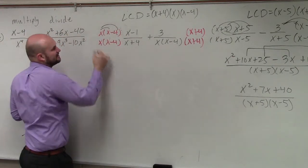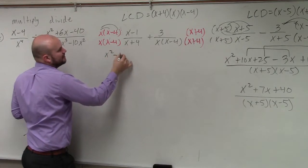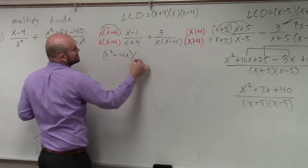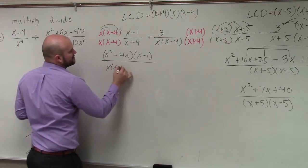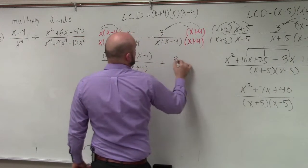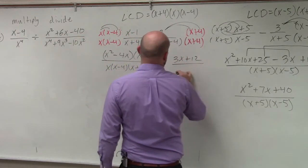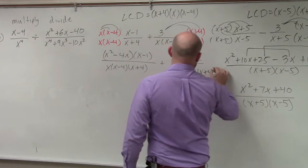Over here, I can distribute this. So I have x squared minus 4x times x minus 1 all over x times x minus 4 times x plus 4, plus I can distribute here, 3x plus 12 divided by x times x minus 4 times x plus 4. OK?